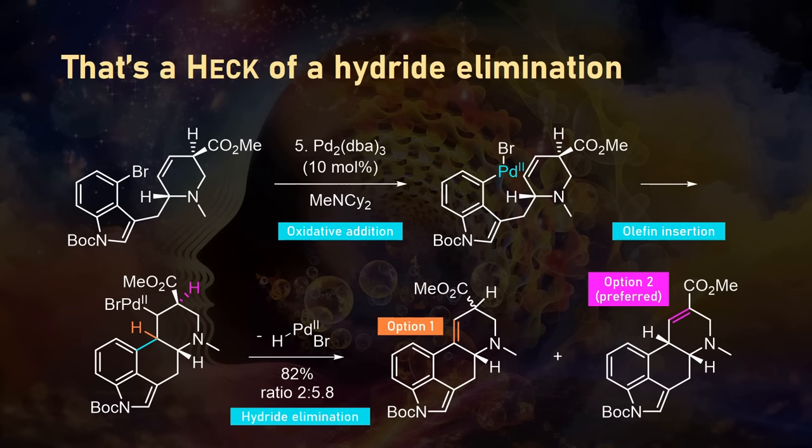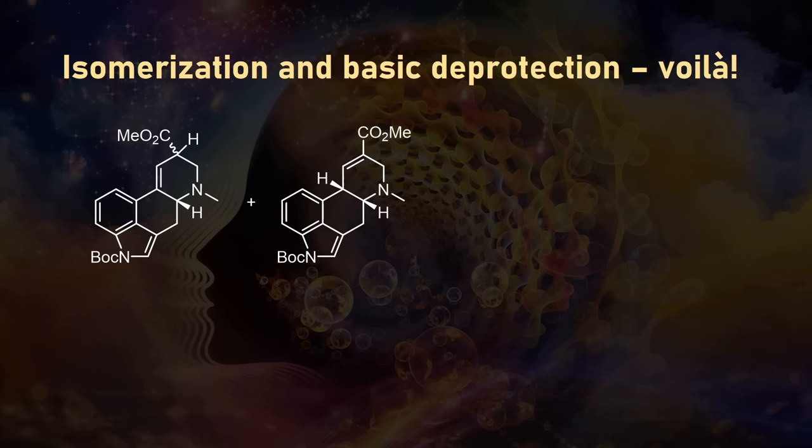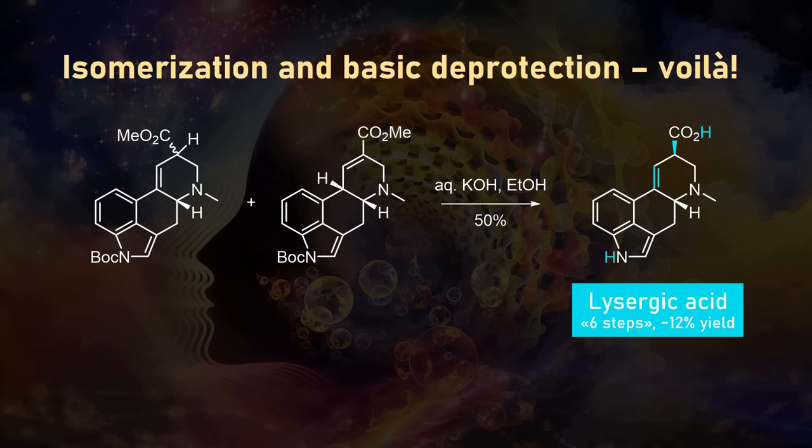Even though they now ended up with three different products, it was no big deal. They simply threw them all together with some potassium hydroxide and heated things up to get lysergic acid in around 50% yield. This is a double deprotection and isomerization sequence — natural products usually correspond to stable isomers, so it's not surprising that the isomerization forms the configuration present in lysergic acid preferentially.